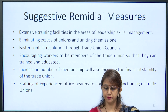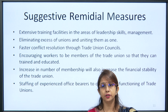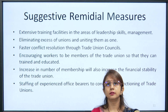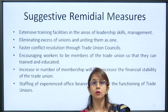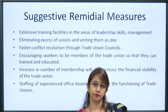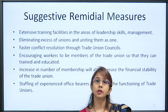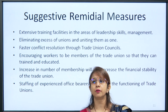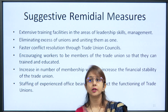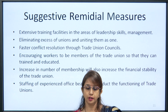Second, eliminating excessive unions and uniting them as one. There should be a rule that includes the amalgamation of multiple smaller unions into one. To make trade unions more effective, the number of members should be larger. By amalgamating more than one trade union, the combined body will be stronger in putting forward the demands of laborers.